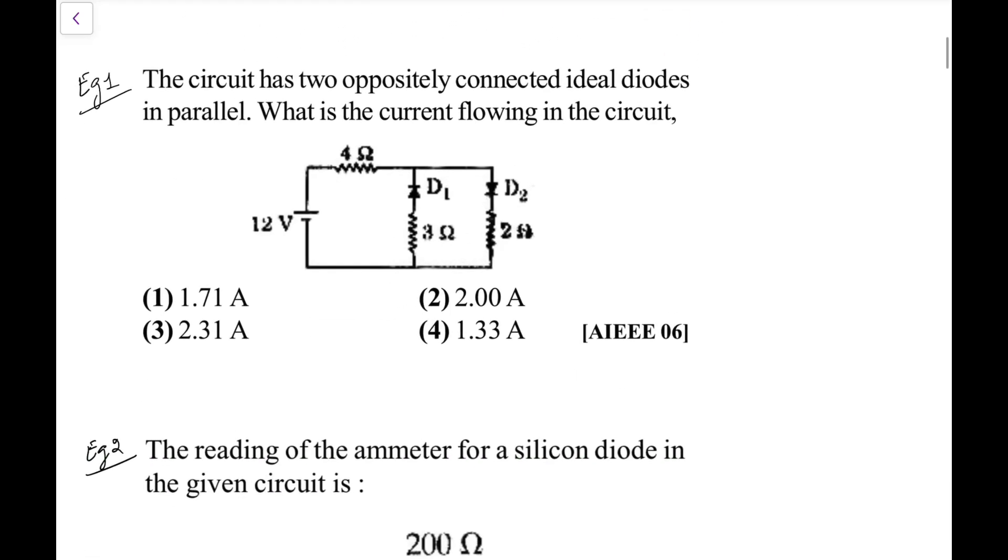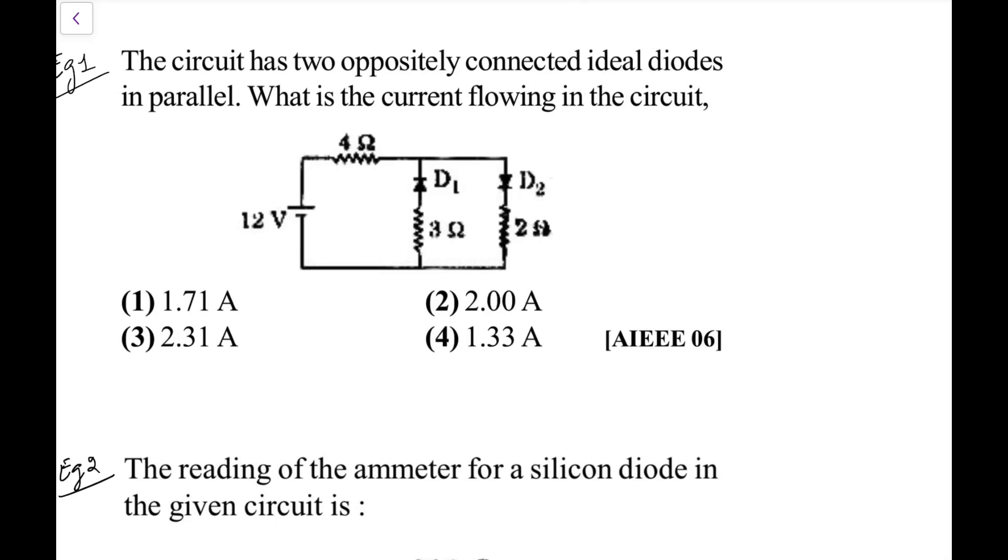Now, just to check the first type of question that we encounter is based on this diode and we assume them to be ideal diodes. The circuit has two oppositely connected ideal diodes in parallel. What is the current flowing in the circuit? So look at it. This is the positive, this is the negative. So this diode is reverse biased, this is forward bias. Because it is reverse bias ideal diode, this branch no current flows. Effectively we have only single loop. So directly it behaves as a simple wire.